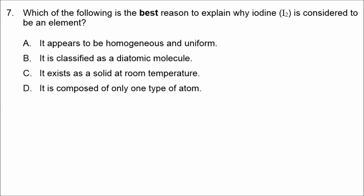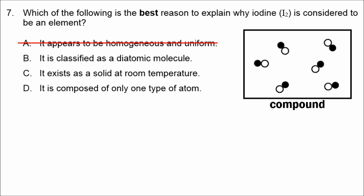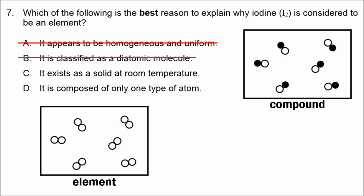In number seven, which of the following is the best reason to explain why iodine is considered to be an element? A solution of salt water can be homogeneous, so being homogeneous doesn't mean something is an element — correct answer is not A. A diatomic molecule can be a compound, so being diatomic doesn't necessarily mean it's an element — not B. Iodine molecules are diatomic but composed of only one type of atom, which is what makes it an element. The answer is D.